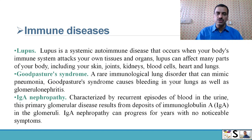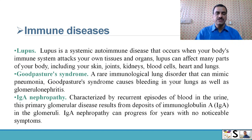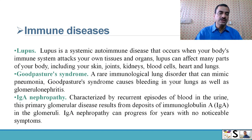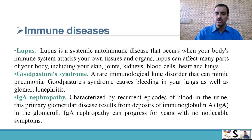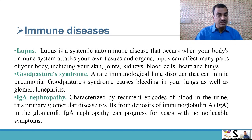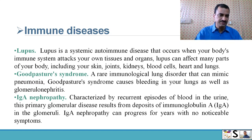The second group of causes is immune disease. First, lupus: lupus is a systemic autoimmune disease that occurs when your body's immune system attacks your own tissues or organs. Lupus can affect many parts of your body including skin, joints, kidneys, blood cells, heart, and lungs.